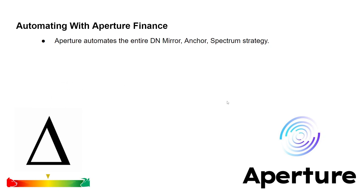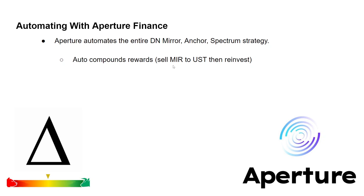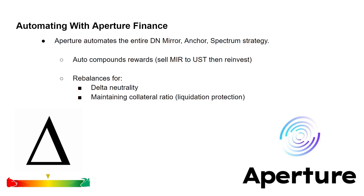Everything I've explained previously is automated by Aperture. The entire delta-neutral Mirror-Anchor strategy is completely automated — all a user has to do is deposit UST and click a button. So what else does Aperture Finance do within that strategy? The first thing is to auto-compound rewards: the strategy earns Mirror tokens from the liquidity pools, and Aperture automatically sells those Mirror tokens to realize them in stablecoins and reinvests into the short farm and long farm. It also automates rebalancing — if the asset goes up in price, the long farm might return fewer shares than owed, messing with delta neutrality.